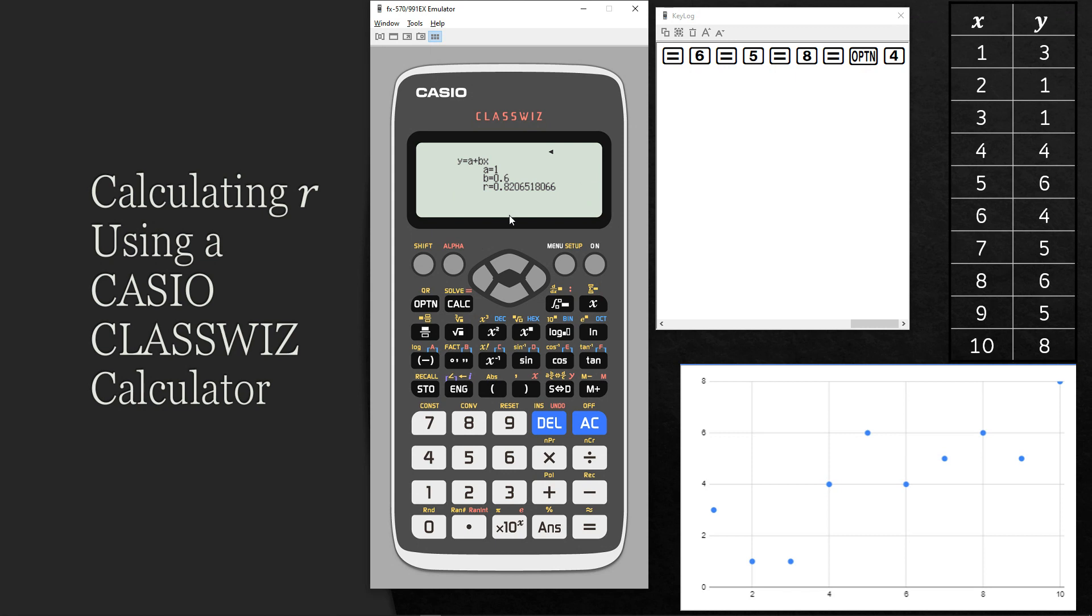If you need to calculate another value of R, we just clear the screen, all clear. And then you can use the arrow keys and change the values if you need to. Or if you find yourself back at this screen, statistics, y equals A plus BX.